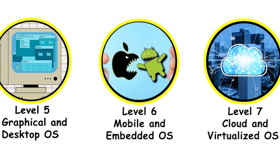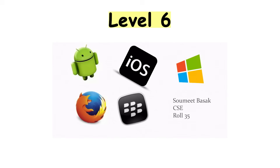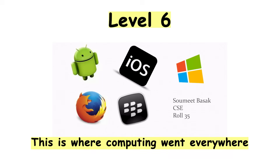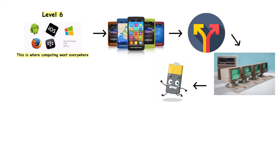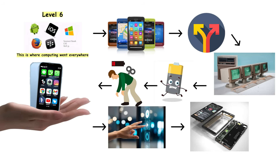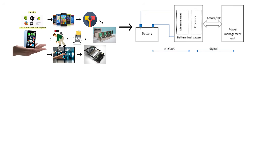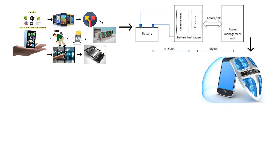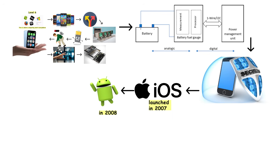Level 6: mobile and embedded operating systems — the portable era. Mobile OS design is completely different from desktop. You're running on battery power, so aggressive power management is critical. The screen is tiny, so the interface has to be touch-optimized. The hardware is limited, so efficiency matters more than raw power. And security is paramount because your phone contains your entire digital life. iOS launched in 2007 and Android in 2008, defining the modern mobile era.